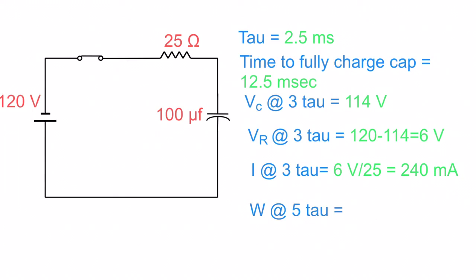So at the third tau, our current is 240 milliamps. So it's dropping. And then by the time we get to the fifth tau, remember, we will have no current. In a capacitor circuit, the only time current flows in this circuit is when the plates are charging. Once the plates are fully charged, current stops flowing.